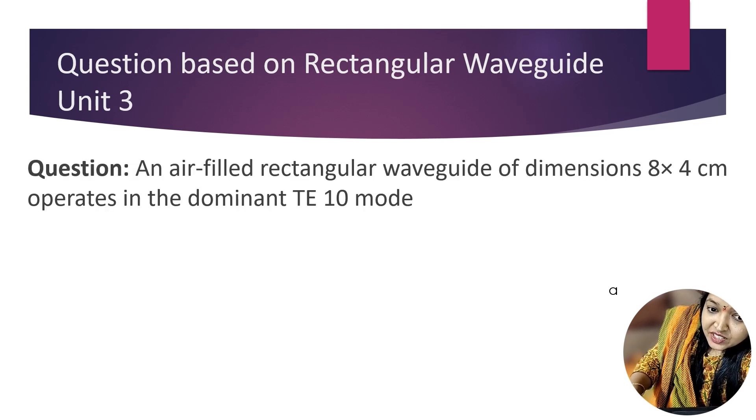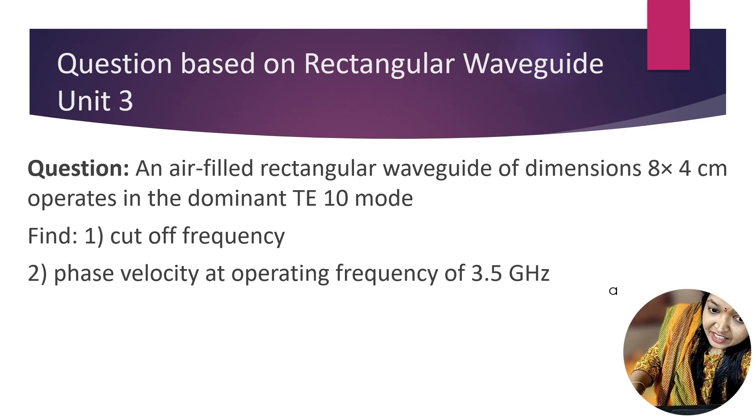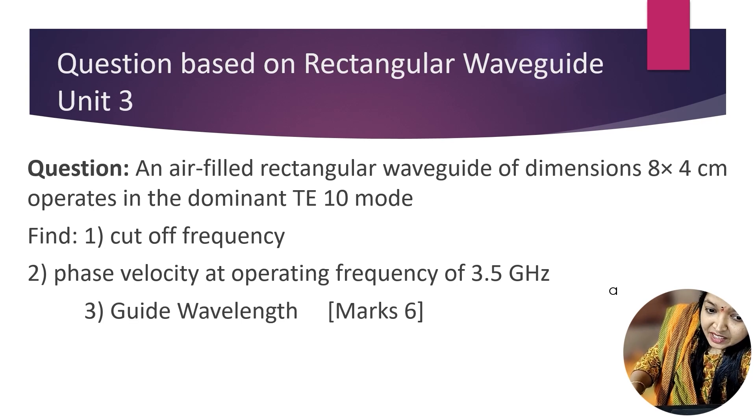The question is: an air-filled rectangular waveguide of dimensions 8 x 4 cm operates in the dominant TE10 mode. First calculate cutoff frequency, then phase velocity at operating frequency of 3.5 GHz, and guide wavelength. This question is for 6 marks.